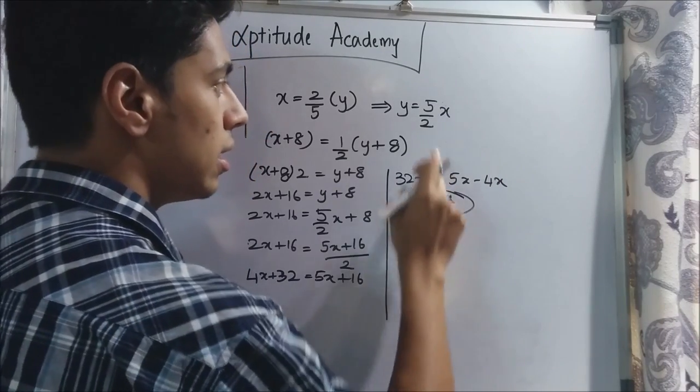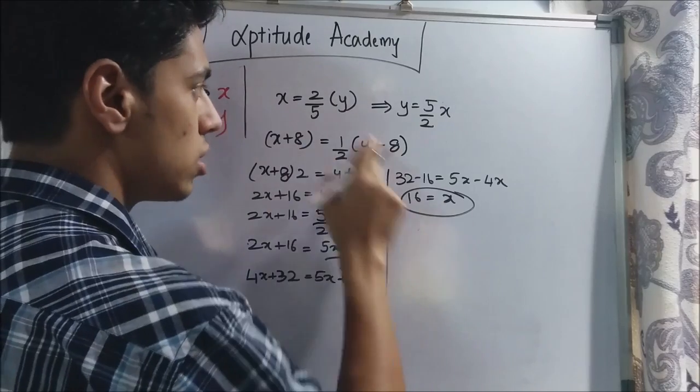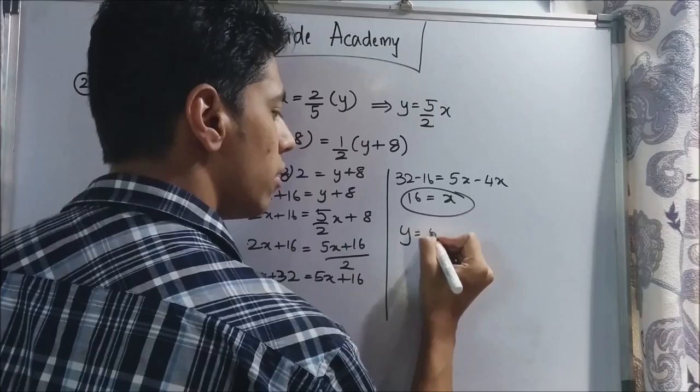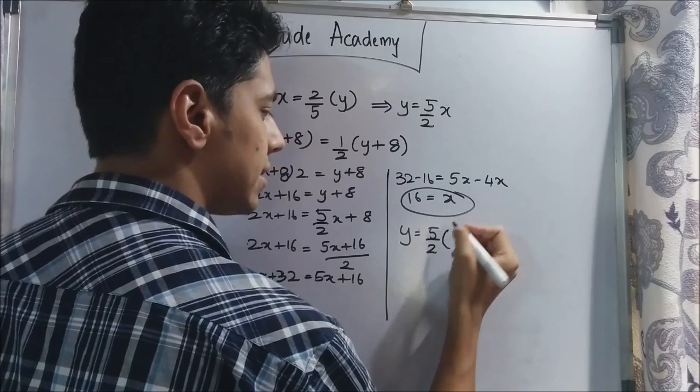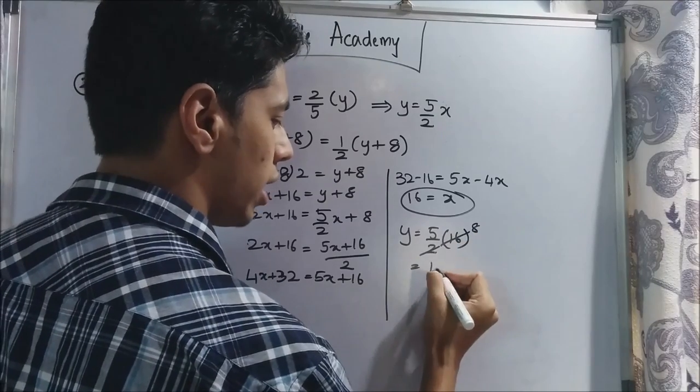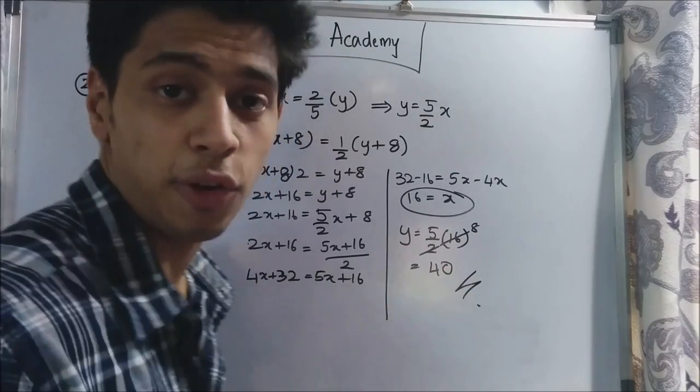But this is not your answer. x is the son's age. y is the mom's age. They have asked you the mom's age. So y will be equal to 5 by 2 into x. x is 16. 2 into 8. So 5 into 8 is 40. So your answer is 40 years.